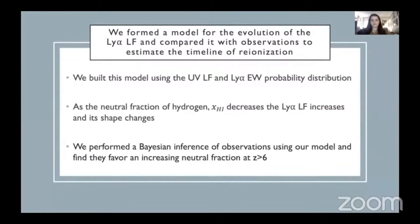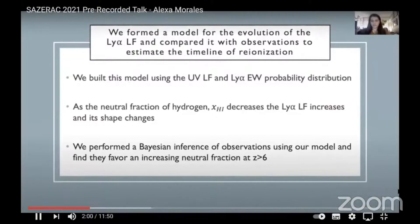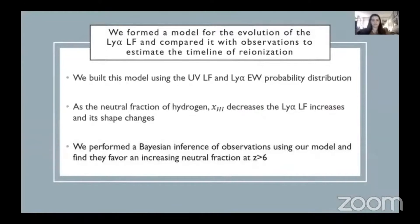Using Lyman-alpha emission, we formed a model for the Lyman-alpha luminosity function and its evolution over a range of high redshifts. By understanding the Lyman-alpha emission detections, non-detections from Lyman break galaxies, and the UV luminosity function during reionization — all based on Charlotte's 2018 paper — we model the evolution of the Lyman-alpha luminosity function at about redshift six for different neutral fractions and eventually other redshift values. We can see how the neutral fraction affects observed Lyman-alpha emission as the universe becomes increasingly ionized and thus less opaque. I'll be going into detail on each component of the model in the next few slides.